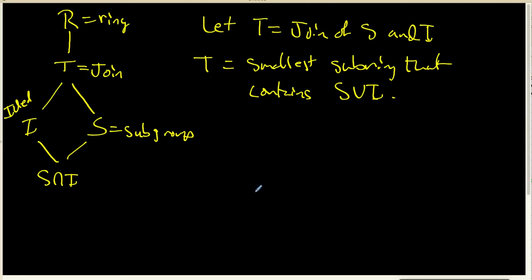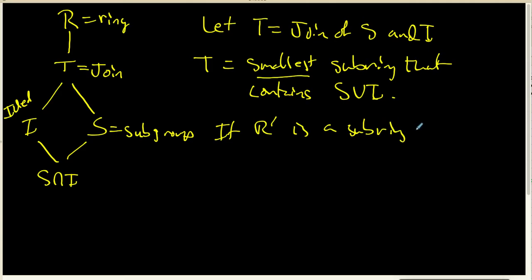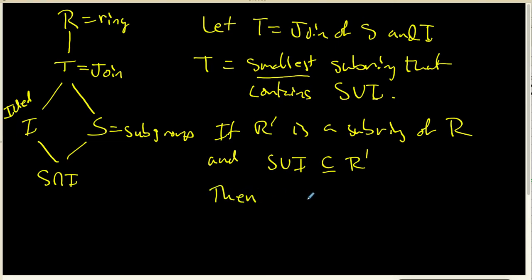What I want to talk about is what 'smallest' means here. The word smallest means this: if R' is a sub-ring of R, and S union I happens to be included in R', then R' has to be at least as big as T. In other words, T has to be a subset of R'. So the join is going to be a subset of any sub-ring that contains S union I.